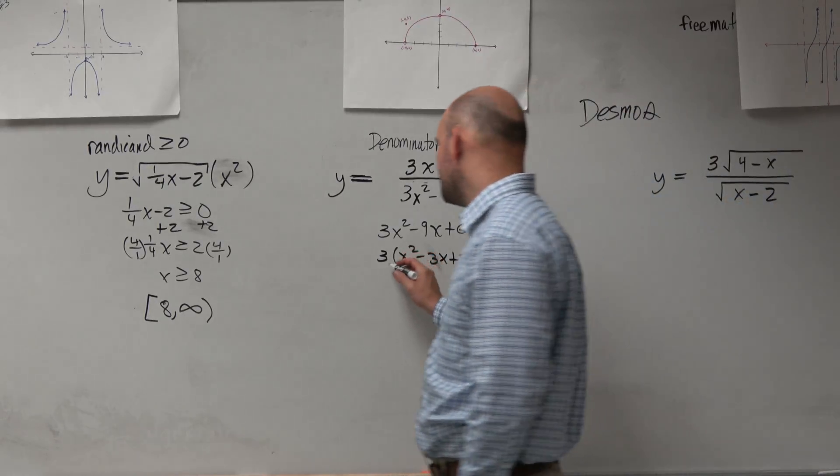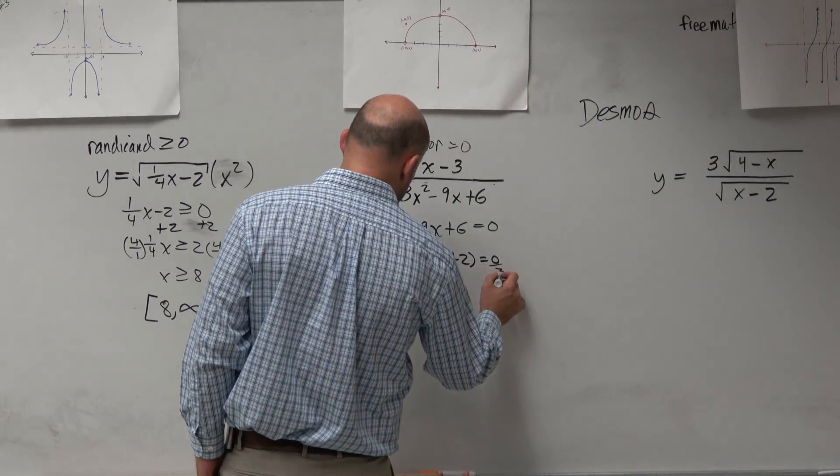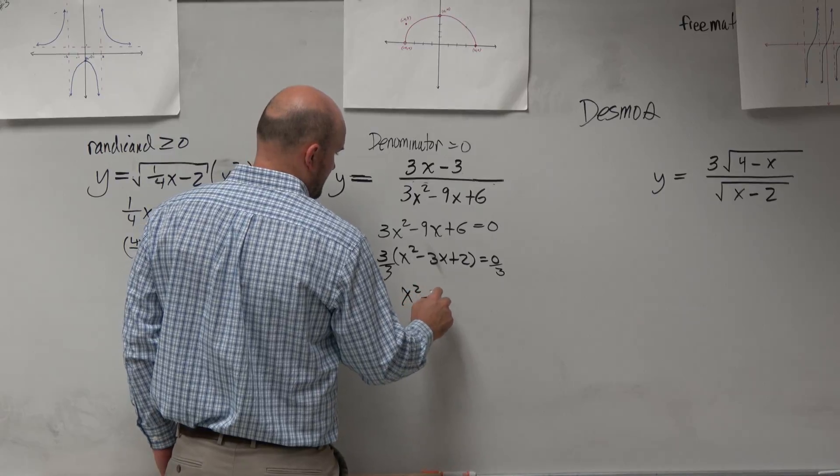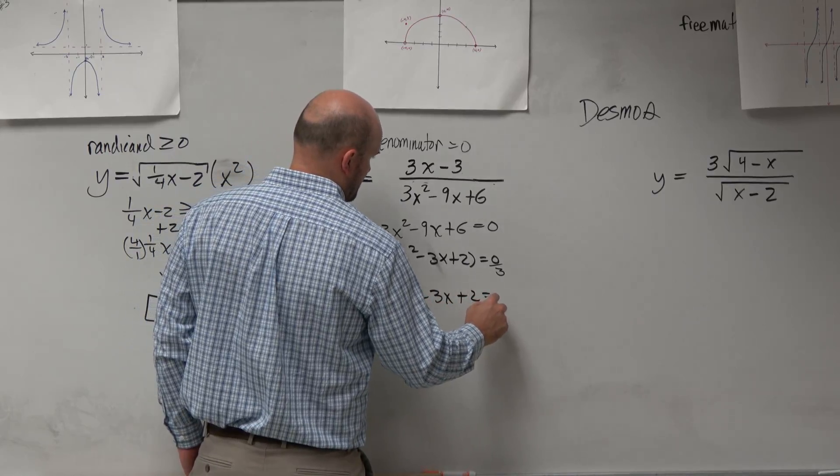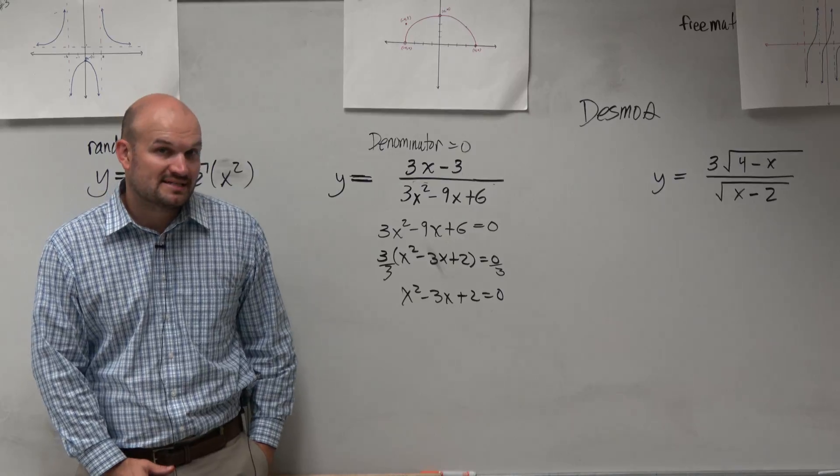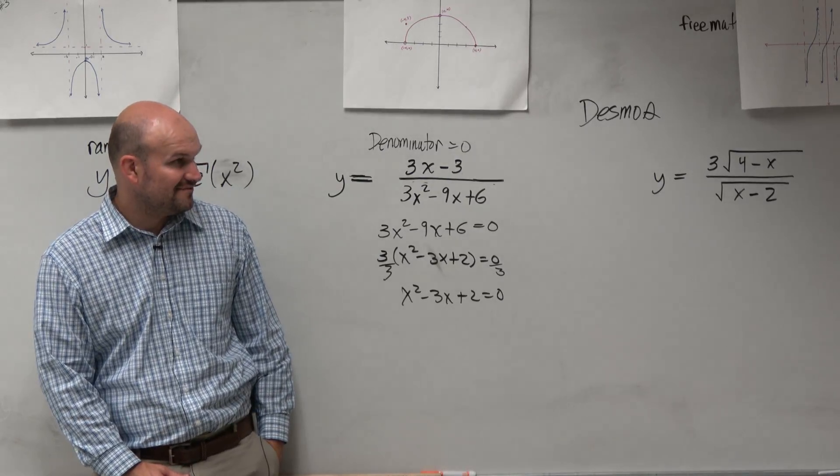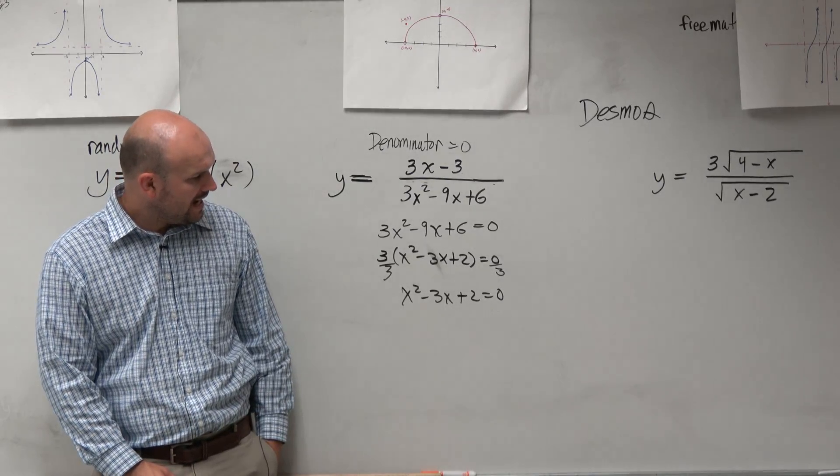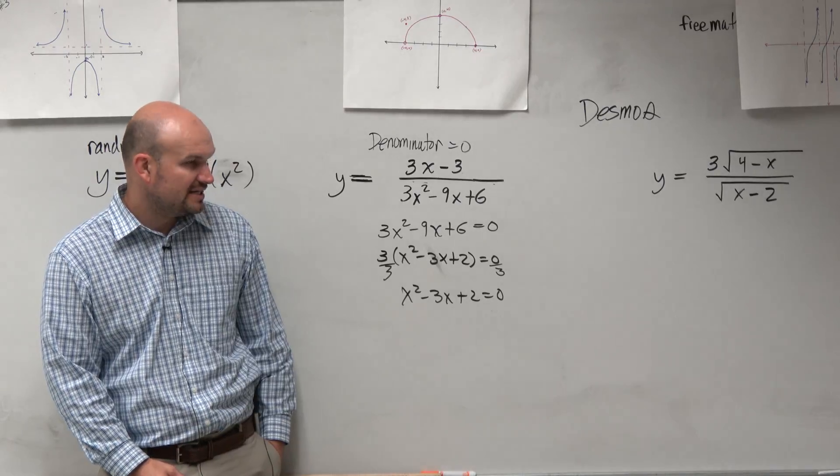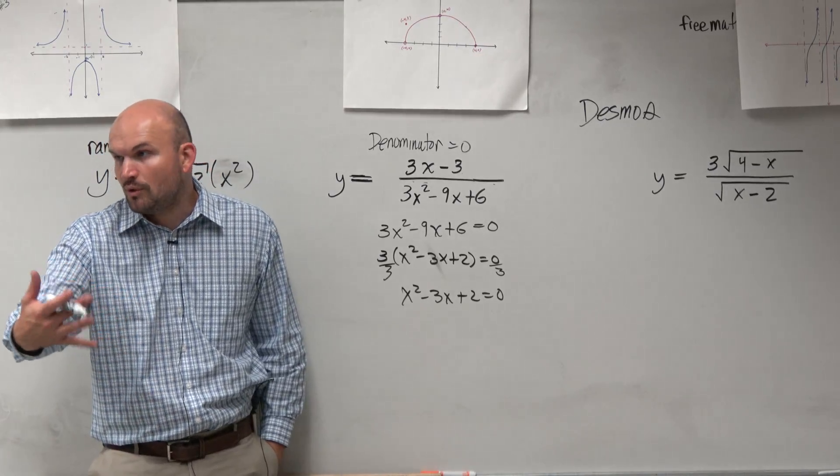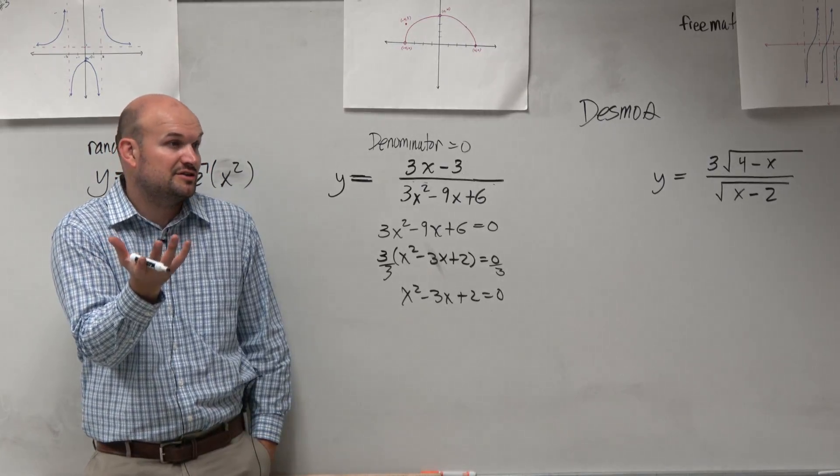Now I could divide out this 3. That's not really affecting my solutions. And now, basically what I need to do is identify or try to see what two numbers multiply to give me 2, add to give me negative 3. Since it's a quadratic trinomial, I know this can be factored into a binomial squared.